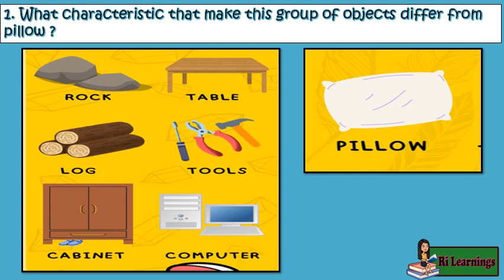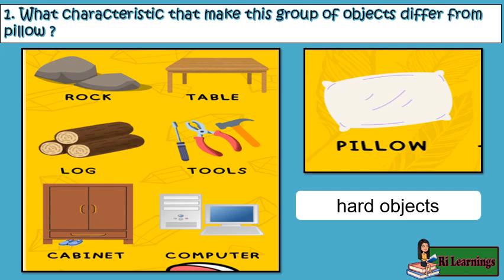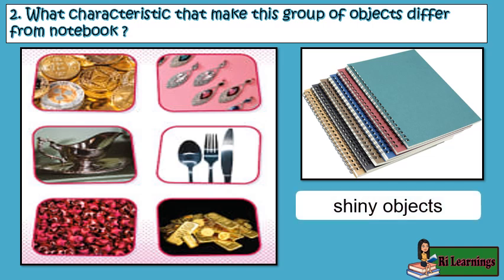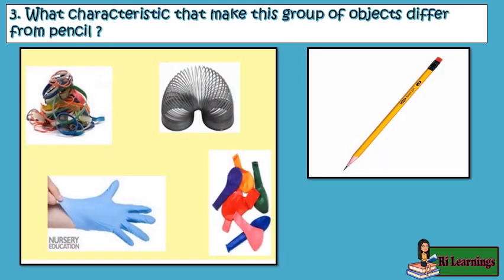It is a characteristic that makes this group of objects differ from a pillow. The group of objects are examples of hard objects. The group of objects are examples of shiny objects. The group are stretchable objects.